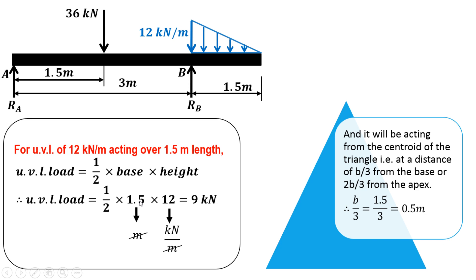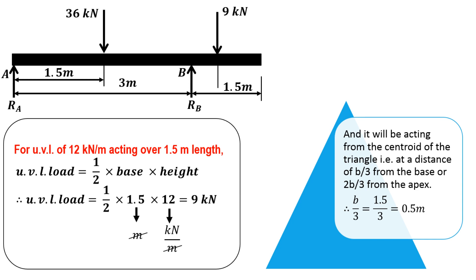As it is a triangular distribution, the centroid of the triangle is at a distance of b/3 from the base, or 2b/3 from the apex. The base is 1.5 meters, so 1.5 divided by 3 is 0.5 meters. So we convert this UVL into a point load of 9 kilonewton acting at a distance of 0.5 meters from the base of the triangle.